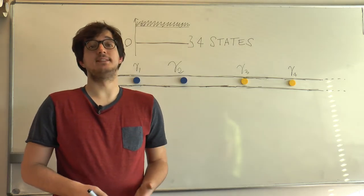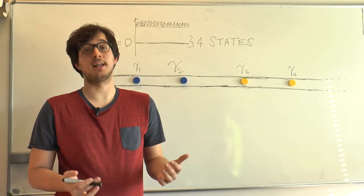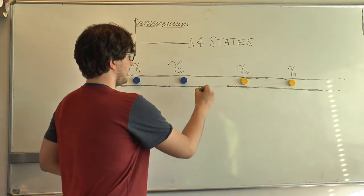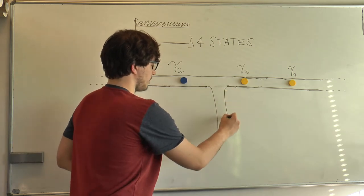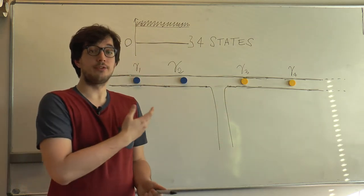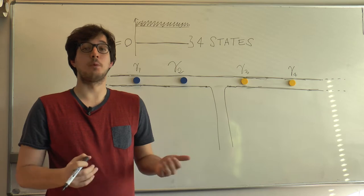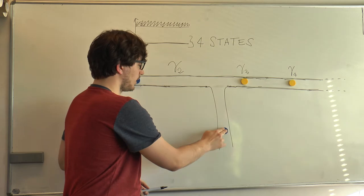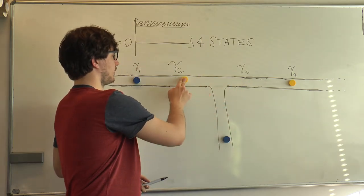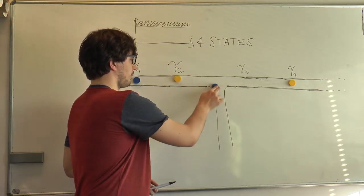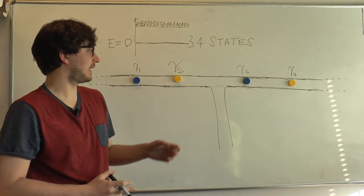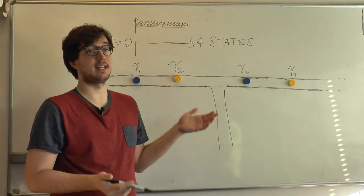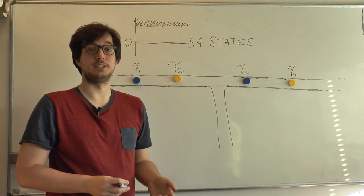However, we can bypass this difficulty by allowing the Majoranas to move in a second direction as well. For instance, we can think that the nanowire has a T-shape, and now I have the space to move this on the left and bring this back up. Now, notice that, at the end, the system is exactly as it was in the beginning, except that the yellow and blue Majoranas have now swapped their positions.